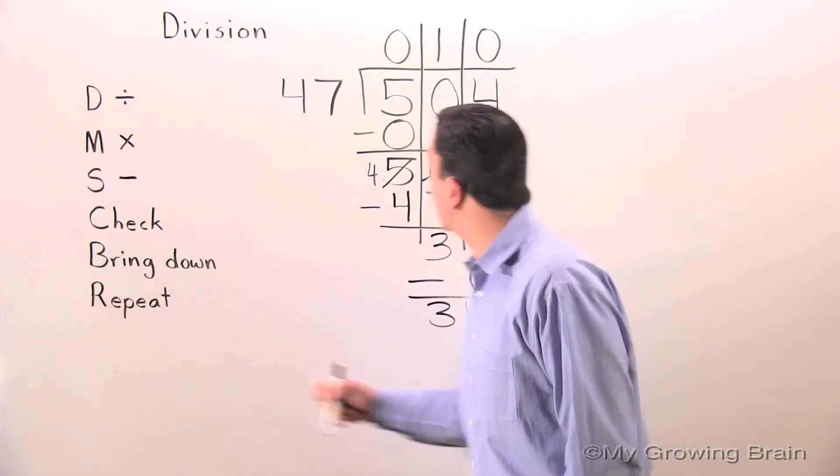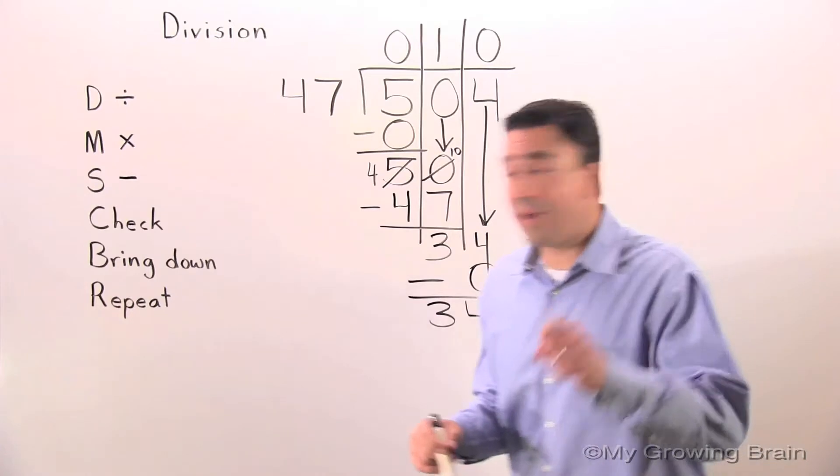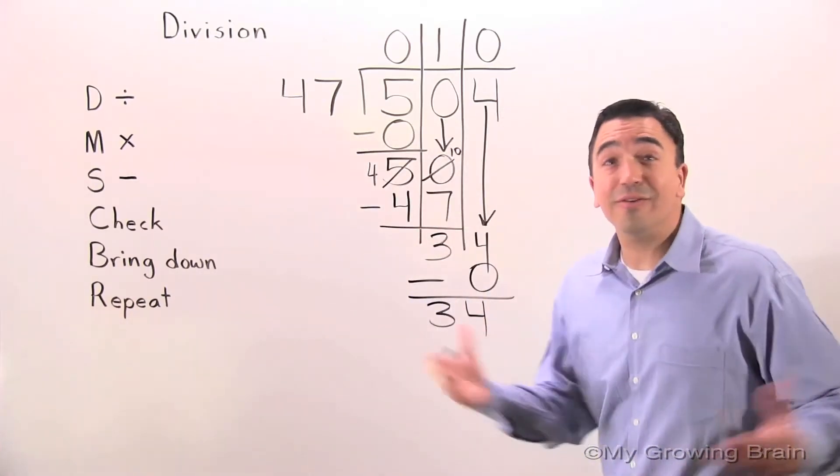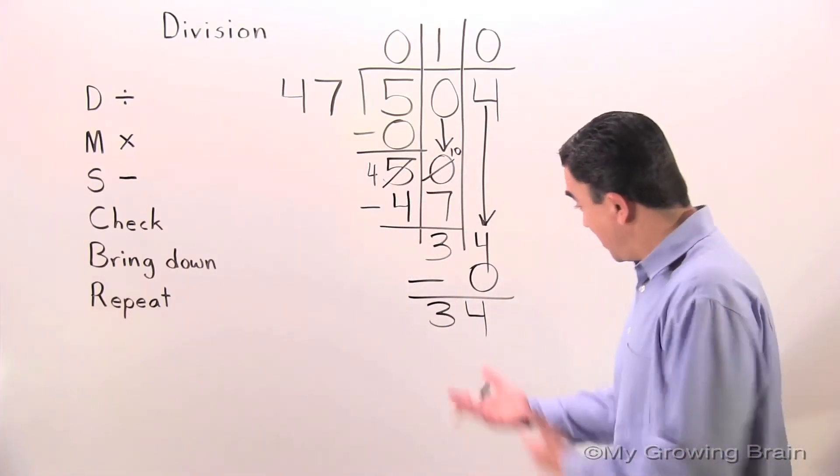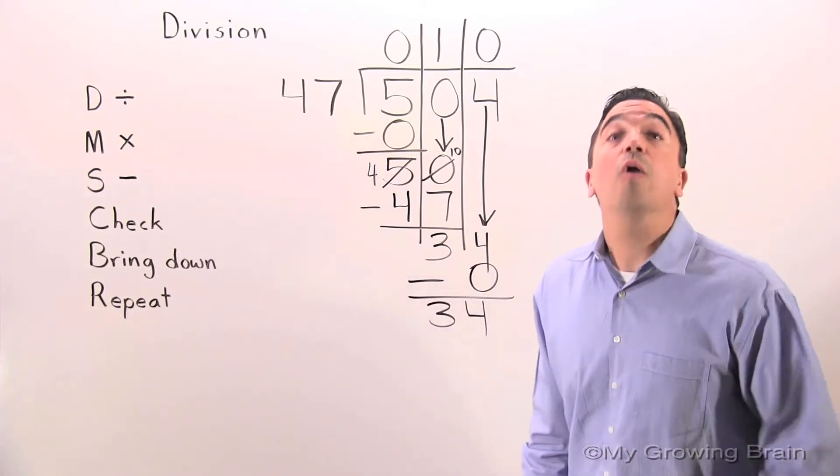Next step. Bring down. There's nothing there. 34 is our remainder.